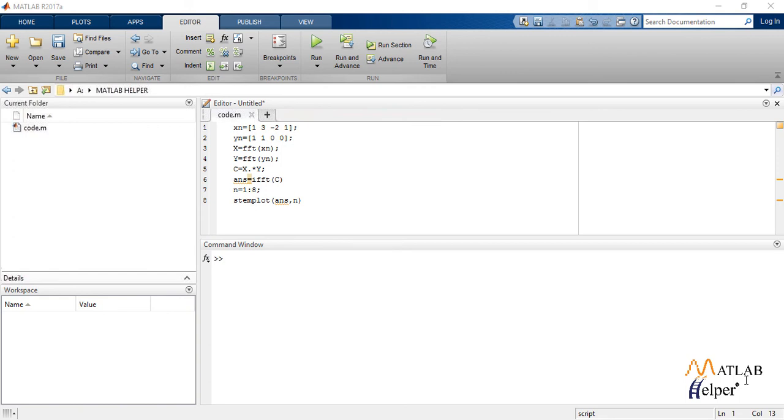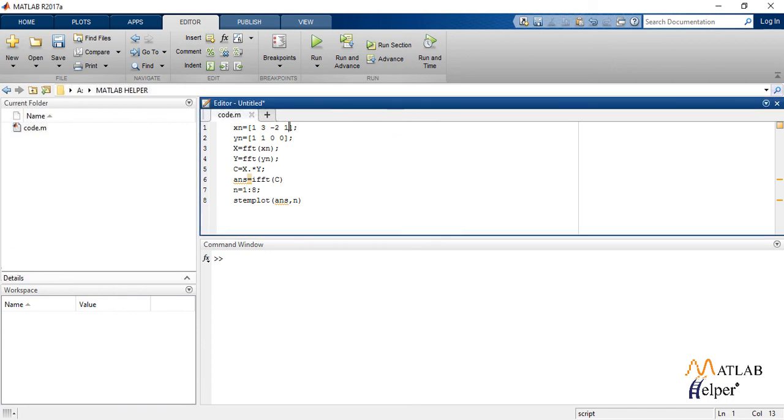To get the same output, let us consider the code for circular convolution as we saw before. The length of output sequence will be 7 according to the equation n plus l minus 1. So, we zero pad our input sequences, which simply means adding zeros after our sequence to make the length of sequence equal to 7.